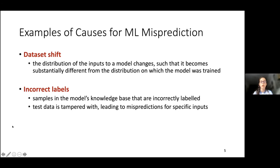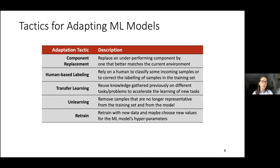Another cause of machine learning misprediction is the presence of incorrect labels in the model's knowledge base. This can happen because, for instance, a fraud analyst incorrectly labeled a transaction, or because an adversary has polluted the model's knowledge base with incorrect labels, leading the model to mispredict for specific inputs. In order to deal with these mispredictions, we envision that the system can detect that the machine learning model is misbehaving and has adaptation tactics available to execute and correct the model.